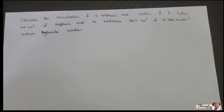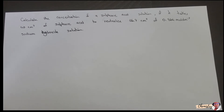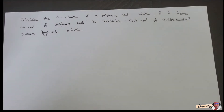For this question, we should calculate the concentration of a sulfuric acid solution if it takes 40 centimeters cubed of sulfuric acid to neutralize 46.7 centimeters cubed of 0.364 mole per dm cubed sodium hydroxide solution. Before we get into our steps, let's just identify all the information that the question has given us.